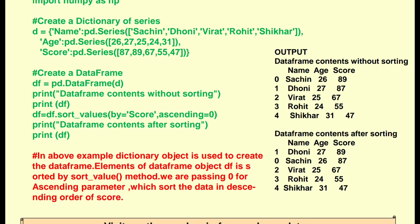The output shows DataFrame contents after sorting. The score column is now in descending order: 89, 87, 67, 55, 45. The name and age columns have also changed accordingly. The index now shows 1, 0, 2, 3, 4 instead of 0, 1, 2, 3, 4.